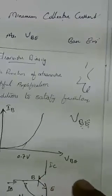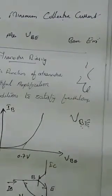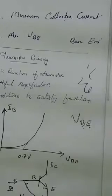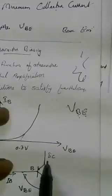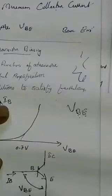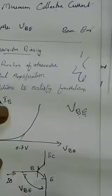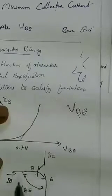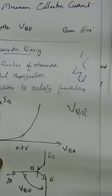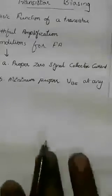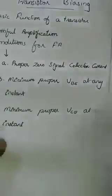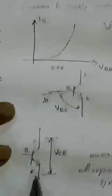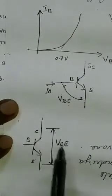The third condition is minimum proper VCE at any instant. VCE is the collector-emitter voltage. The base-collector junction must remain reverse biased. For silicon, the minimum VCE required is at least 1 volt.